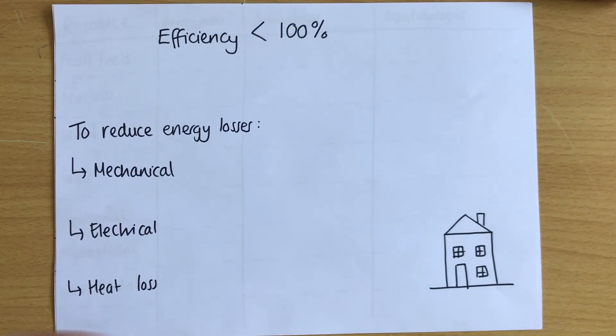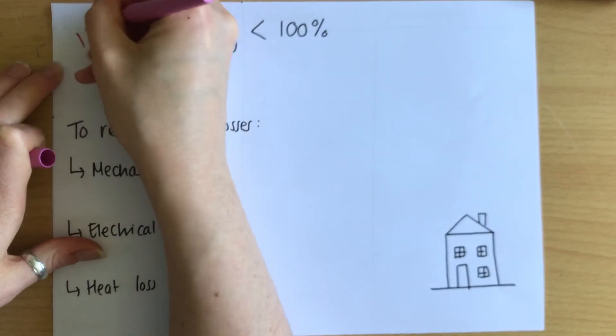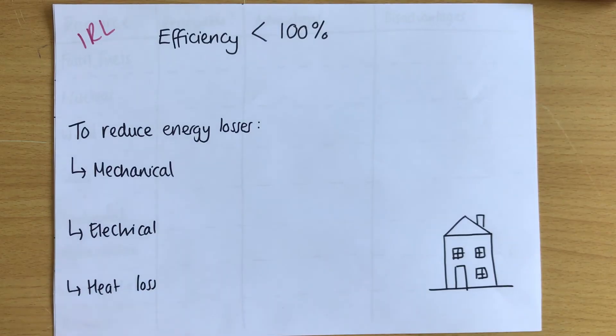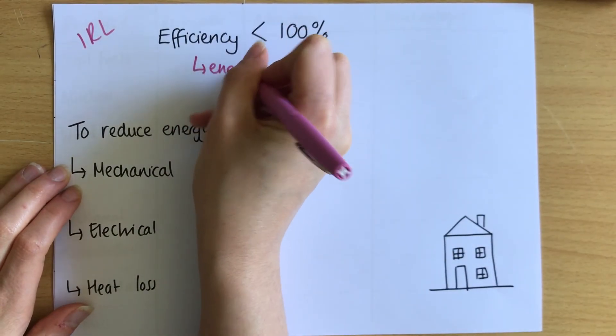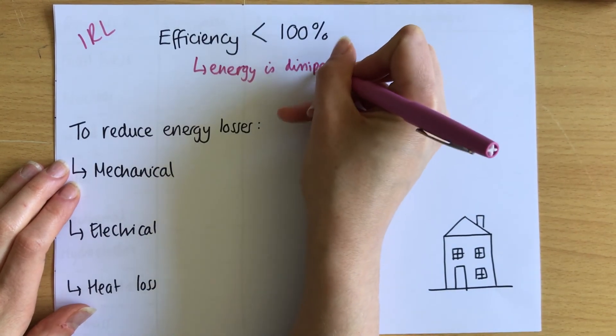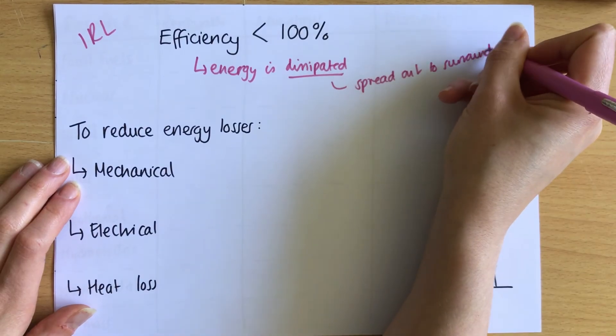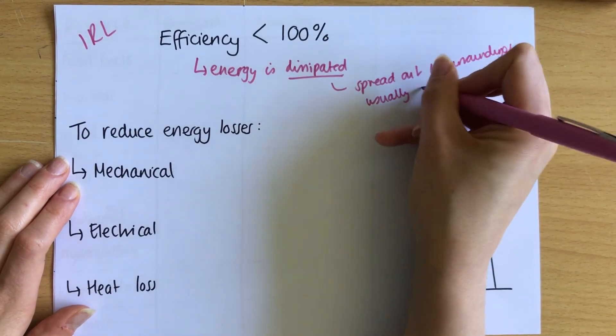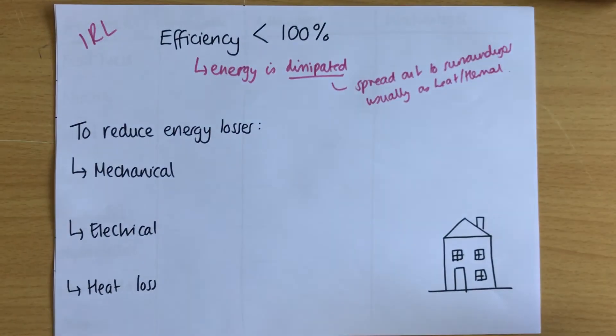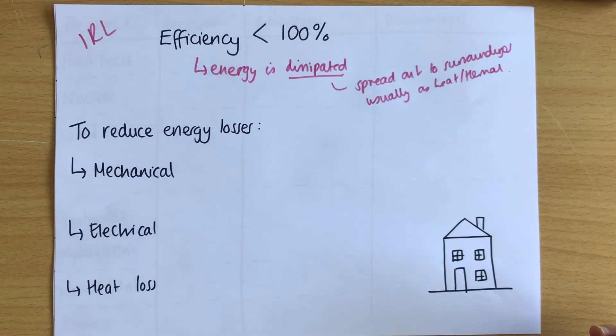Which brings me on to this idea here that efficiency is always less than 100%. So in real life, efficiency is always less than 100%. You do not get 100% efficient systems. And that's because energy is always dissipated. Now dissipated means spread out to surroundings. And it's usually as heat, which then becomes the thermal energy of the surroundings. And it can be not heat. Like if you want something to be hot, then something else will be the energy that you wasted. Maybe it's sound or light. For example, you're heating something up with a fire. The light energy isn't needed. It's a bit of waste. But usually that dissipated energy will be heat. And the word dissipated is a really useful one to know for the exam.